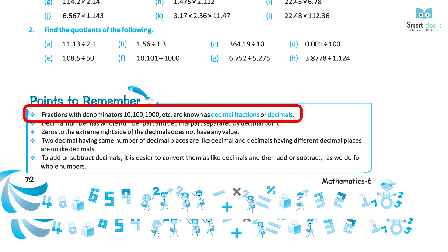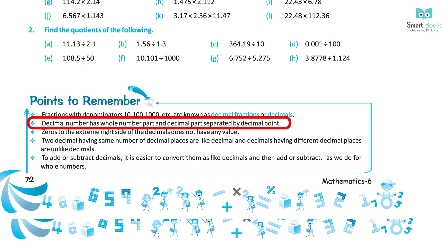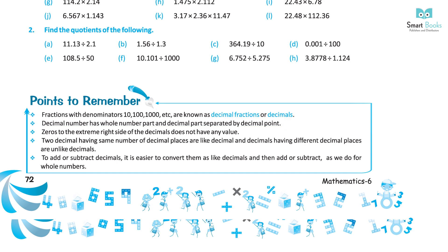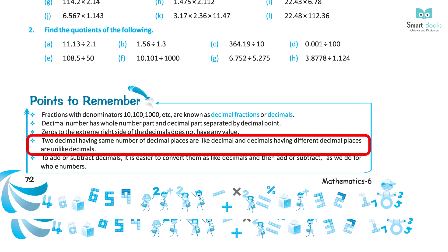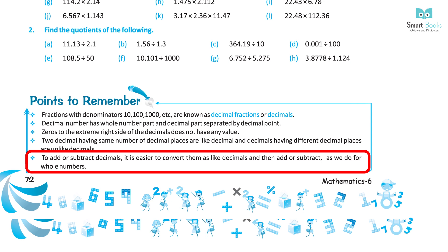Points to Remember: Fractions with denominator 10, 100, 1000, etc. are known as decimal fractions or decimals. A decimal number has a whole number part and a decimal part separated by the decimal point. Zeros to the extreme right of the decimal do not change the value. Like decimals have the same number of decimal places; unlike decimals have different decimal places. To add or subtract decimals, convert to like decimals and then proceed as with whole numbers.